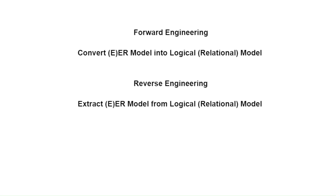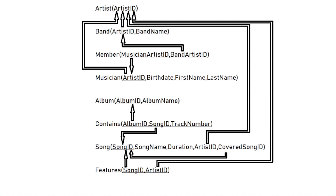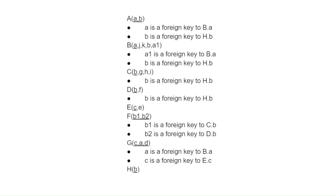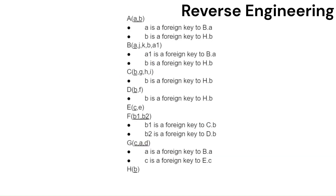Let's focus for a moment on reverse engineering, which is the process of taking a logical schema like this one and inferring the original ER or EER model out of it. Here is our logical schema again. We're going to convert this back to an ER model. However, just to make things a bit more difficult, let's remove the helpful semantic information behind the names of our tables and fields. Here is a schema that is equivalent to the one you just saw, but purposefully shuffled around a bit and with the names made generic. The goal of reverse engineering is to infer a plausible entity relationship model based on this schema.